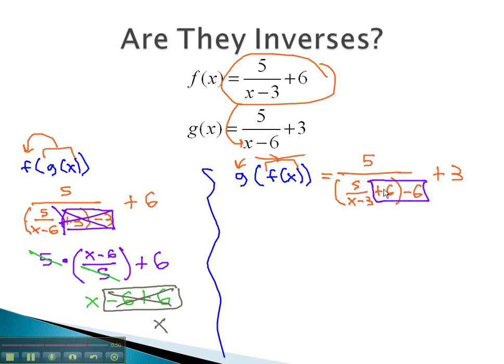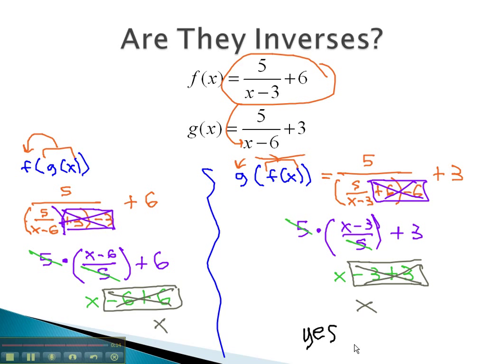Again, you notice the plus 6 minus 6 subtract out, and again, we're dividing by a fraction. We'll multiply by the reciprocal, (x - 3)/5, and add 3 at the end. Notice again, the 5's divide out, and we're left with x - 3 + 3. Again, the minus 3 plus 3 subtract out to 0, and we're just left with x. Because both of the compositions were able to simplify down to x, we say, yes, these are inverses. f(x) and g(x) undo the operation of the other function.